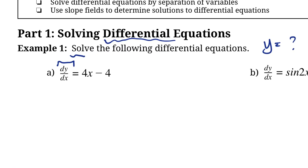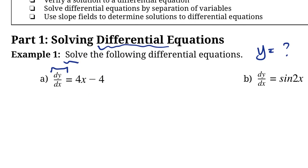So if we wanted to find the original function of dy/dx of 4x minus 4, how would we do it? By now we understand, according to our fundamental theorem of calculus, that the integral of a derivative is the function itself. So if we take the integral of dy/dx, we'd be left with y, because it would just undo it and we'd get the original function.